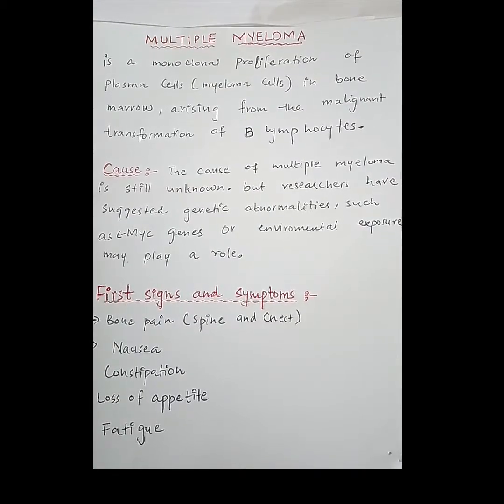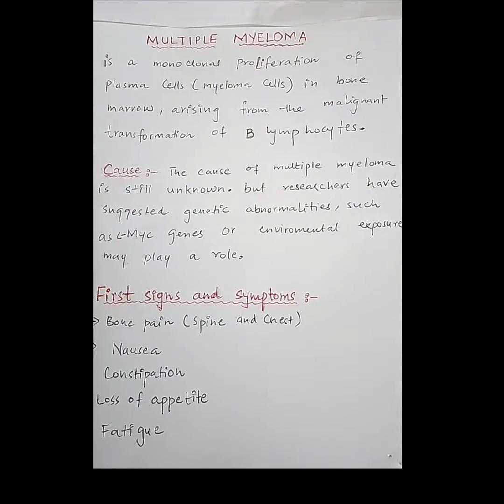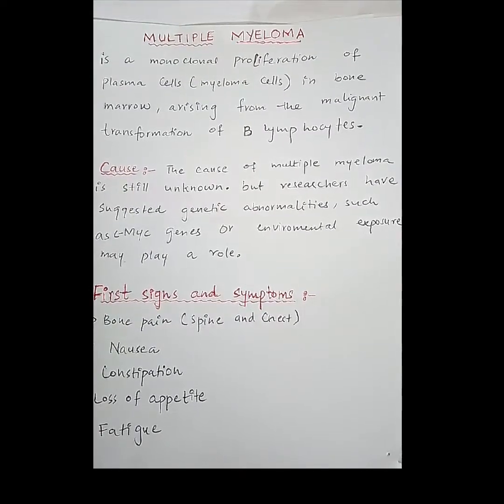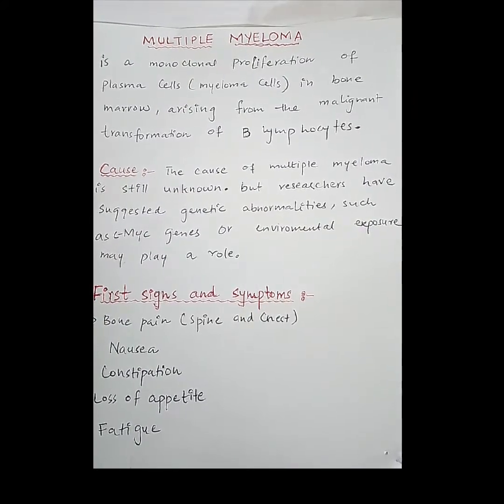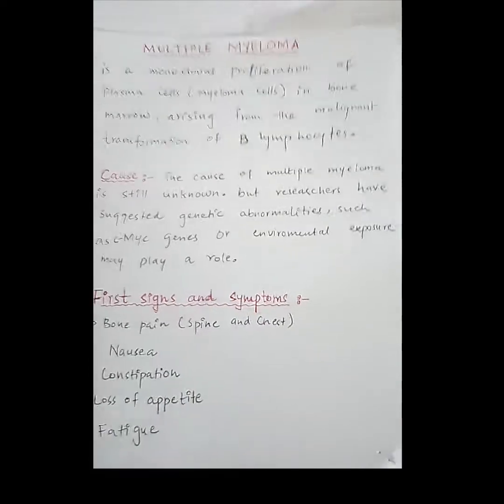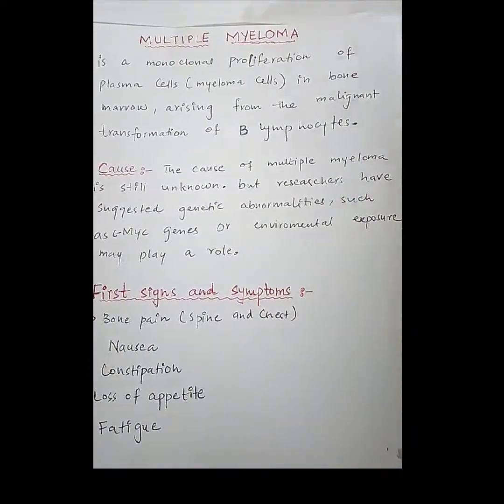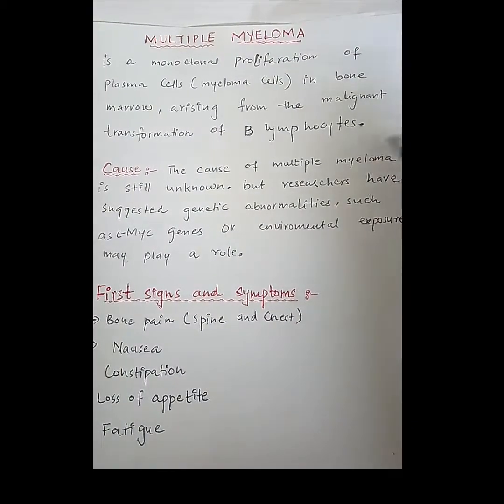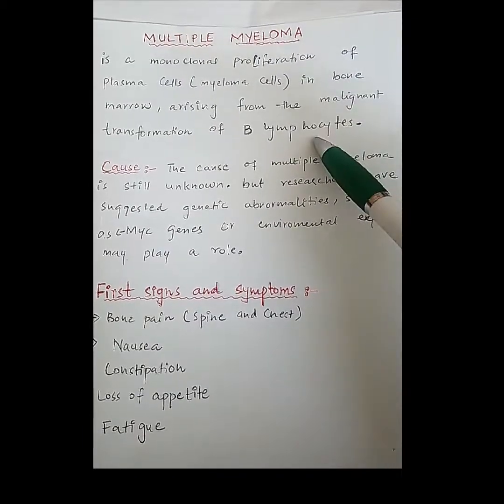Plasma cells originate from B lymphocytes and are important in antibody functions. Multiple myeloma involves abnormal production of plasma cells that originate from the malignant transformation of B lymphocytes.